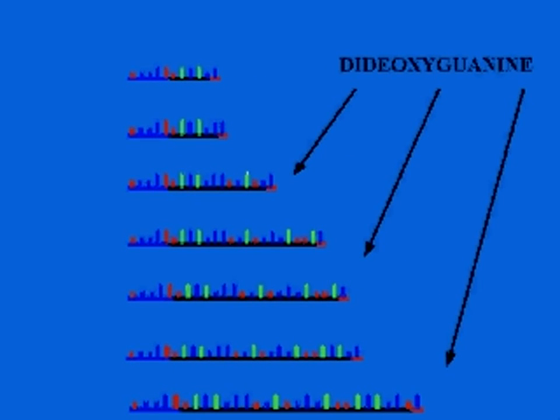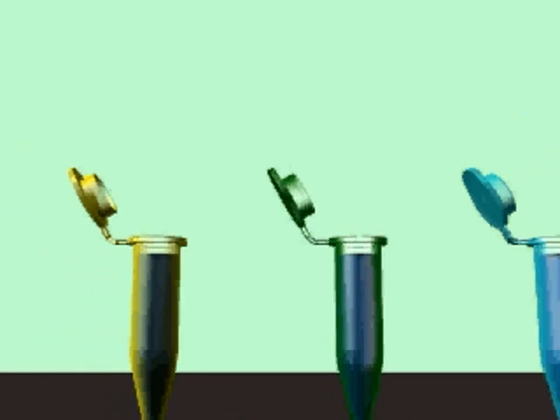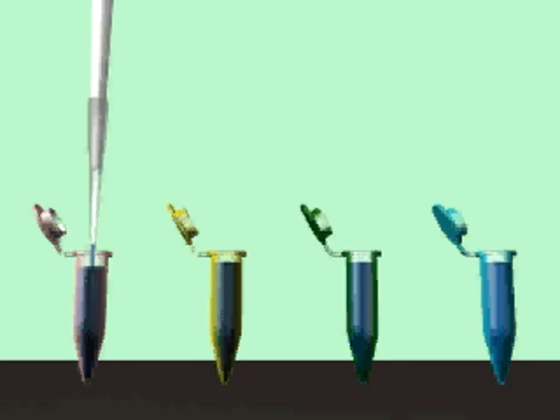In this tube, dideoxyguanine triphosphate was added, so termination only occurs at sites of guanine addition. This collection has the same five-prime terminus defined by the primer and a dideoxyguanine at the three-prime terminus.